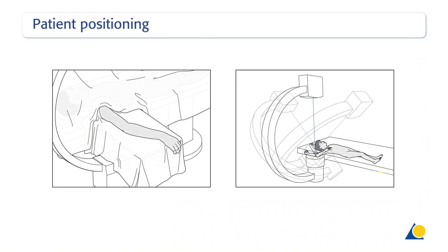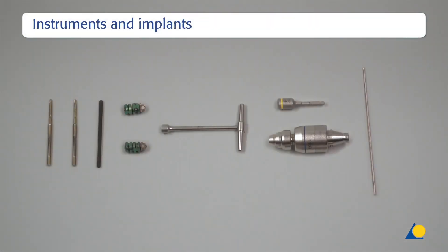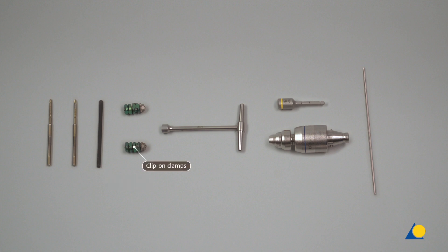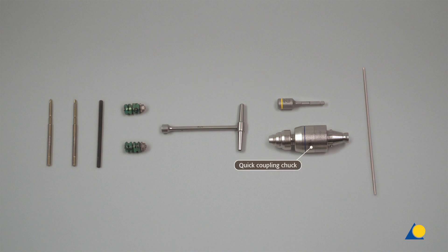The patient is positioned supine on the operating table with the arm prone. After reduction has been achieved, the arm should be moved as little as possible; images should be obtained by rotating the C-arm and not moving the arm. The instruments required are: the shunt's screws 3.0 to 4.0 mm diameter, the rod 4.0 mm diameter, the clip-on clamp, the T-wrench, the adapter for shunt's screw 4.0 mm diameter, and the quick coupling chuck.